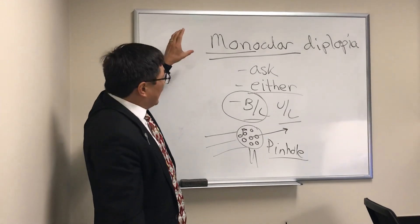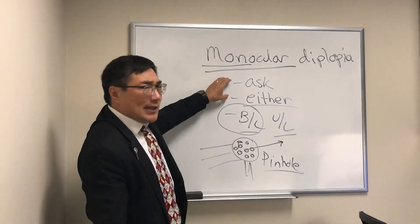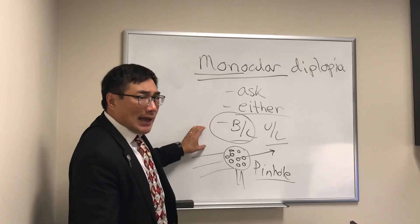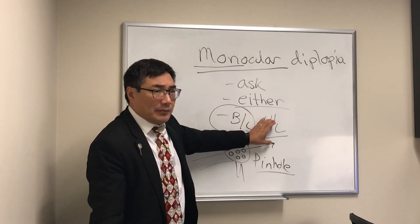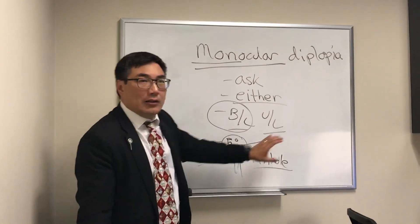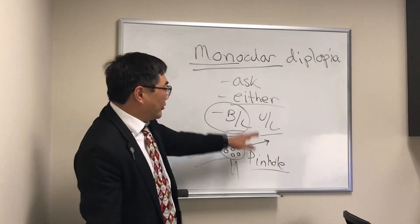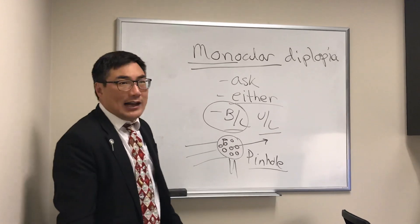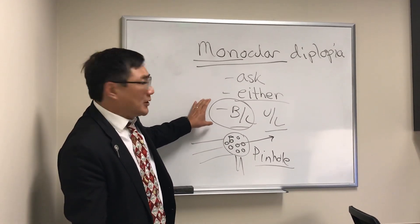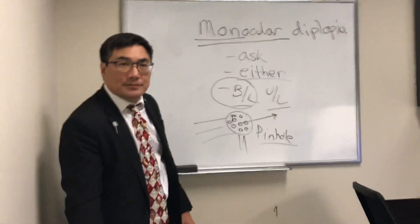Bottom line: monocular diplopia — ask if it goes away with covering either eye. It can be bilateral monocular or unilateral monocular. If it's unilateral monocular, do the pinhole test and slit lamp exam, because it's in the eye. Make sure it's not bilateral cerebral polypopia or palynopsia. If it's neither of those, it is not neuro-ophthalmology.